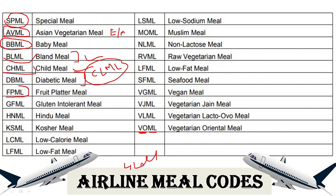FPML is the Fruit Platter Meal — only seasonal fruits are served. Some vegans prefer this over VGML (Vegan Meal) or VVML (Vegan Vegetarian Meal) because they do not fully trust that airlines make those meals completely vegan. RVML is the Raw Vegetarian Meal, where only raw vegetables and salads are given. So if you do not trust VGML, you can opt for RVML or FPML.